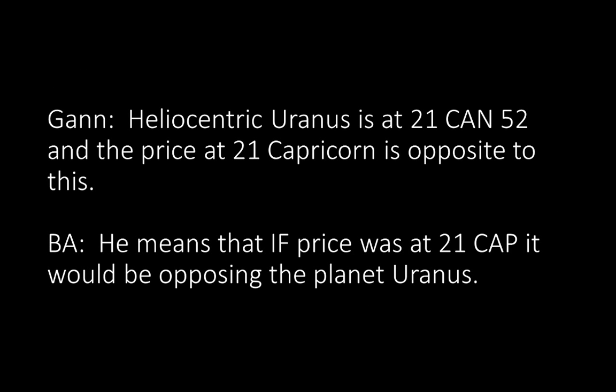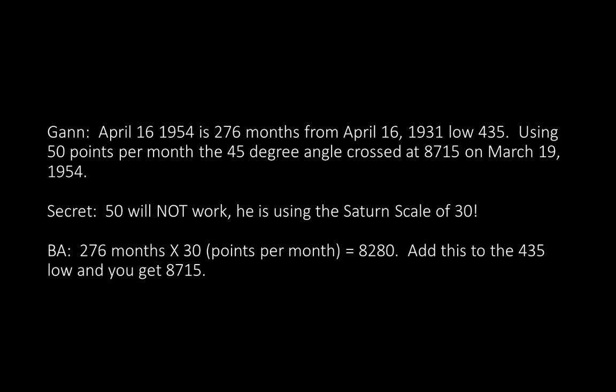GAN: heliocentric Uranus is at 21 Cancer 52, and the price at 21 Capricorn 52 is opposite to this. He means that if price was at 21 Capricorn, it would be opposing the planet Uranus — a very important concept, meaning it would be in aspect to Uranus, and if there's a connection there, it'll stop it. GAN: April 16, 1954 is 276 months from April 16, 1931, low of 435. Using 50 points per month, the 45-degree angle crossed at $8,715 on March 19, 1954.